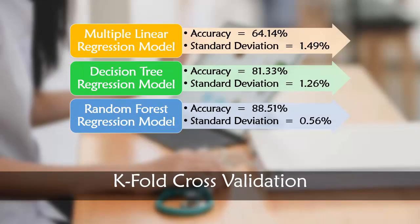Now using k-fold cross validation our multiple linear regression model obtained an accuracy of 64.14%. Our decision tree regression model obtained an accuracy of 81.33%. And our random forest regression model obtained an accuracy of 88.51%. So clearly our random forest regression model is the best model here.